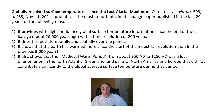In other words, we not only have a time chart of global temperatures, but we now know how those temperatures were distributed over the surface of the Earth. This paper shows that the Earth has warmed more since the start of the Industrial Revolution than in the previous 9,000 years.